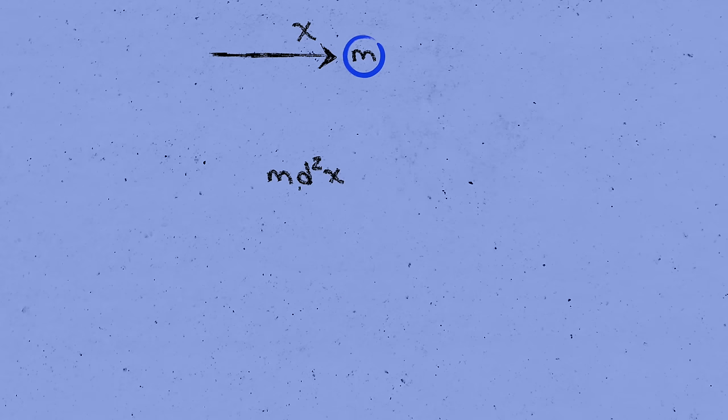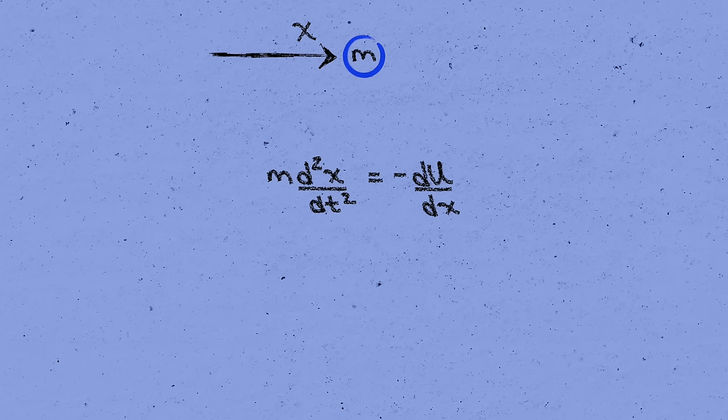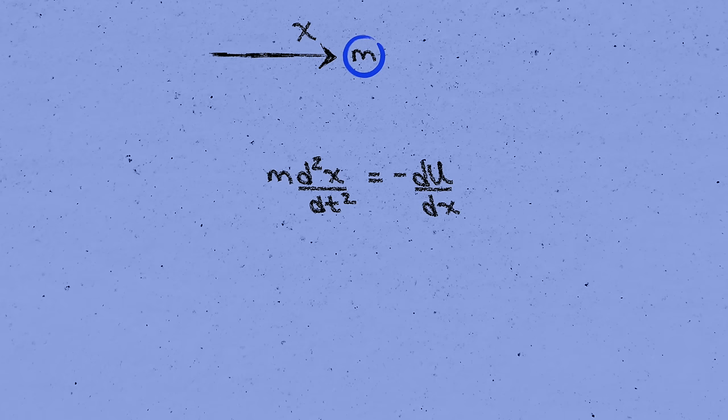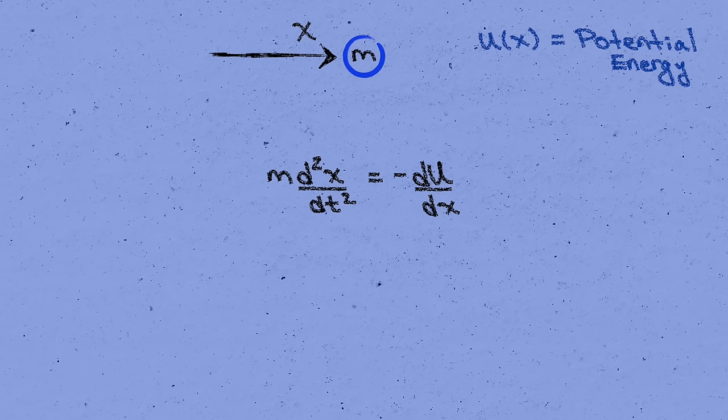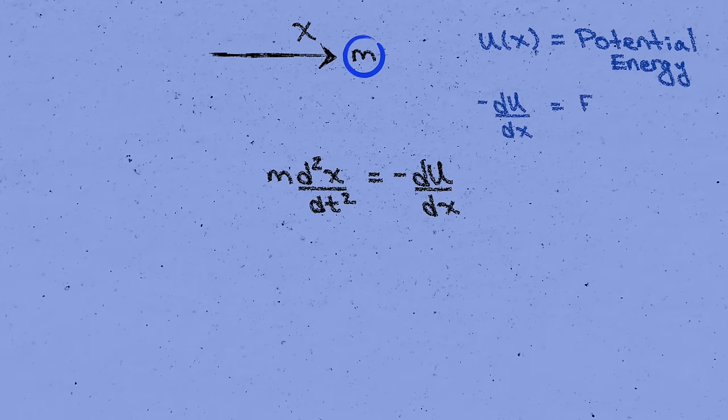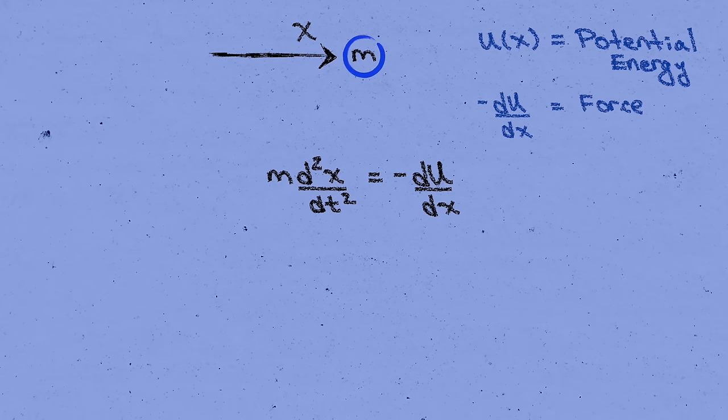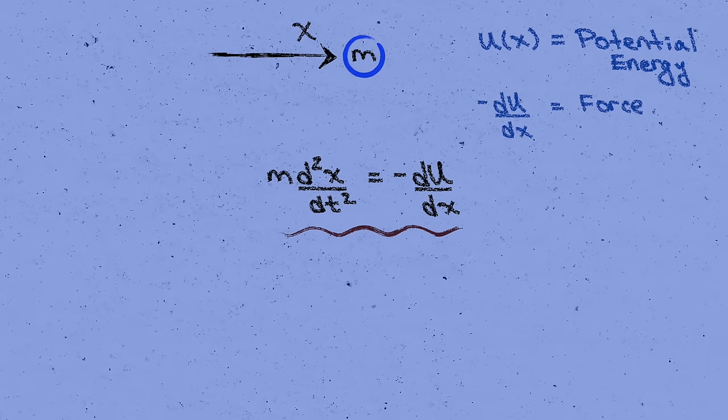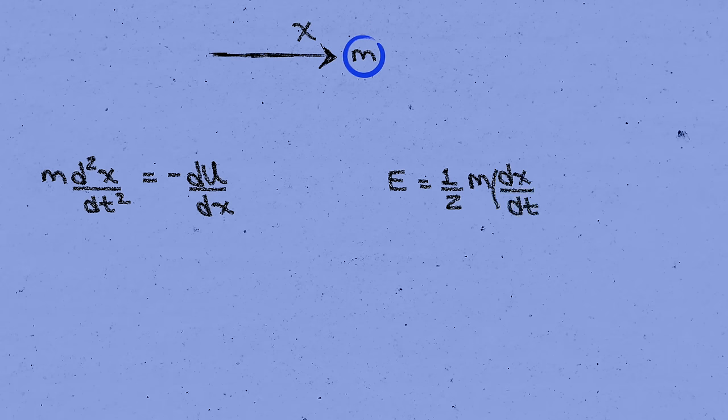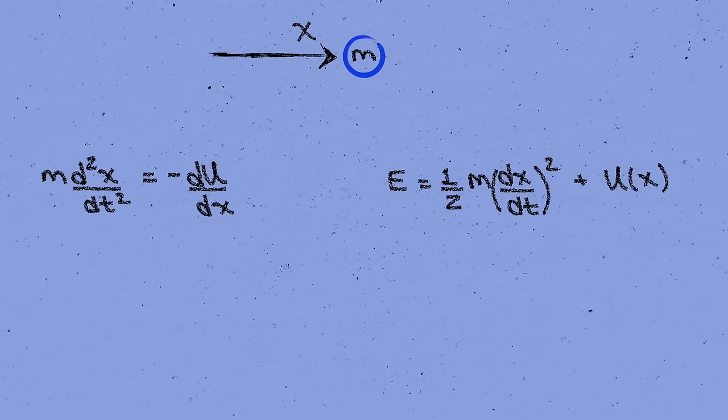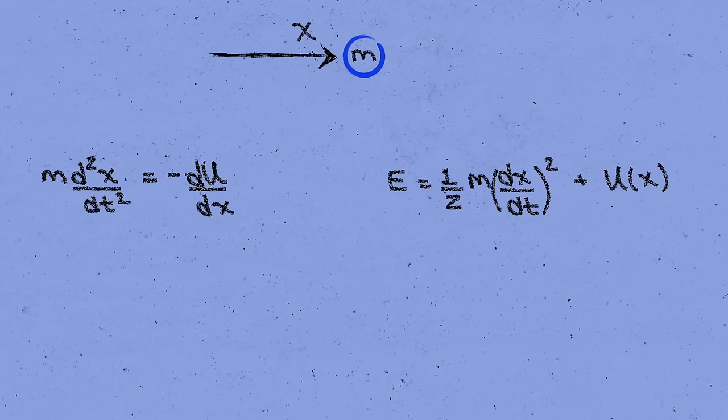Let's say we have a particle of mass m with coordinate x. Its equation of motion, in other words the f equals ma equation, is given by m times the second derivative of x with respect to time, equals minus the derivative of u with respect to x, where u here is the potential energy function, and the force is given by minus its slope. The Poisson bracket is going to enable us to write this equation in a more suggestive way. Let's first of all write down the total energy of the particle. That's ½mv squared, where the velocity is dx by dt, plus u, the potential energy.